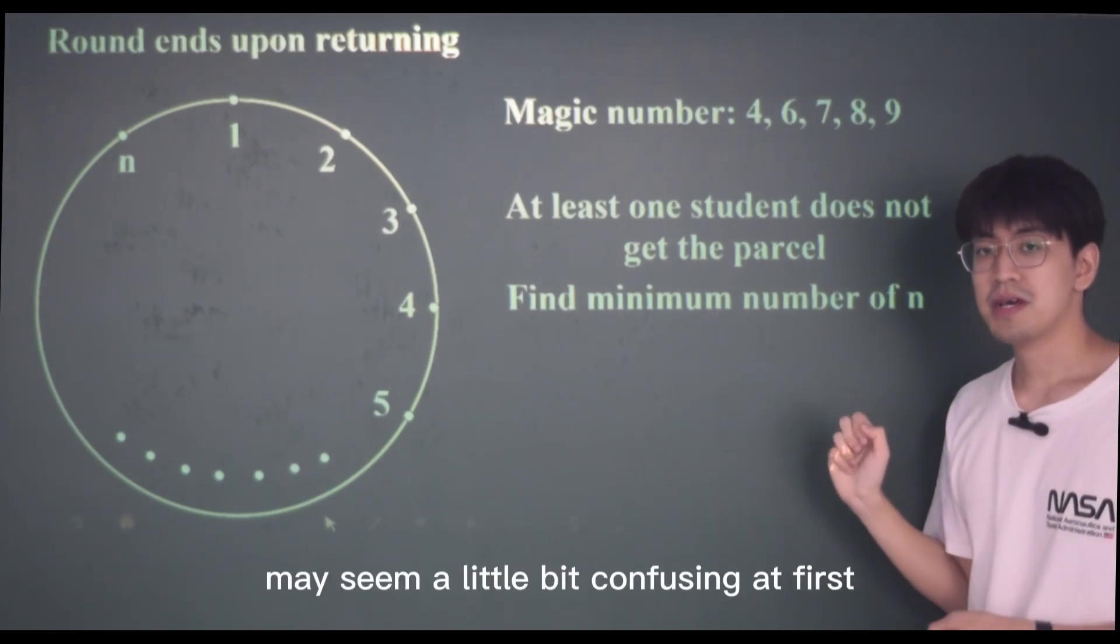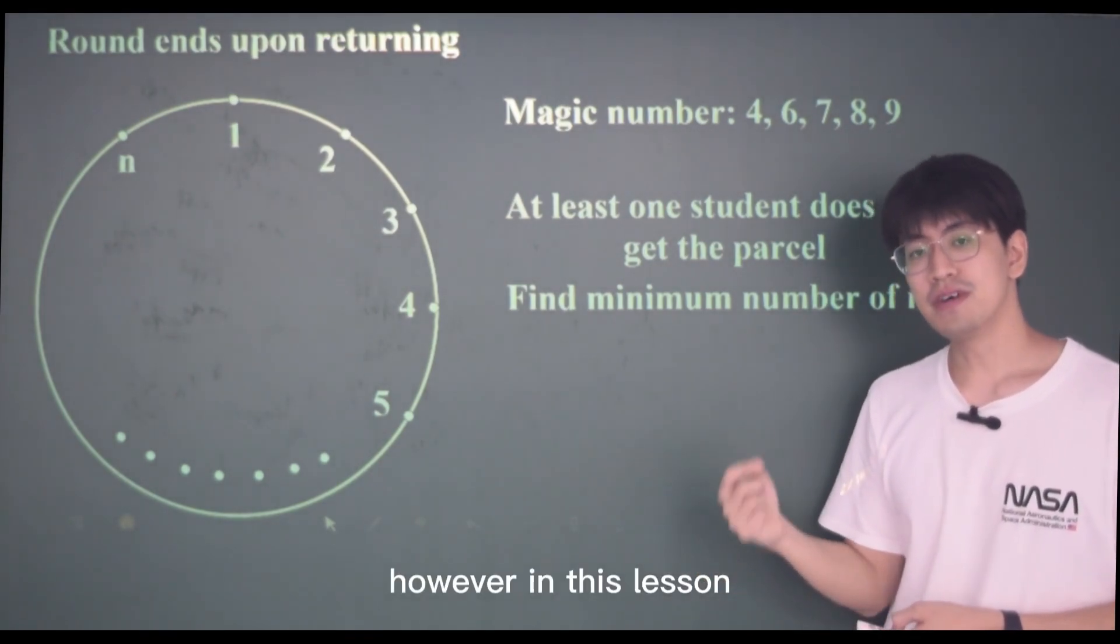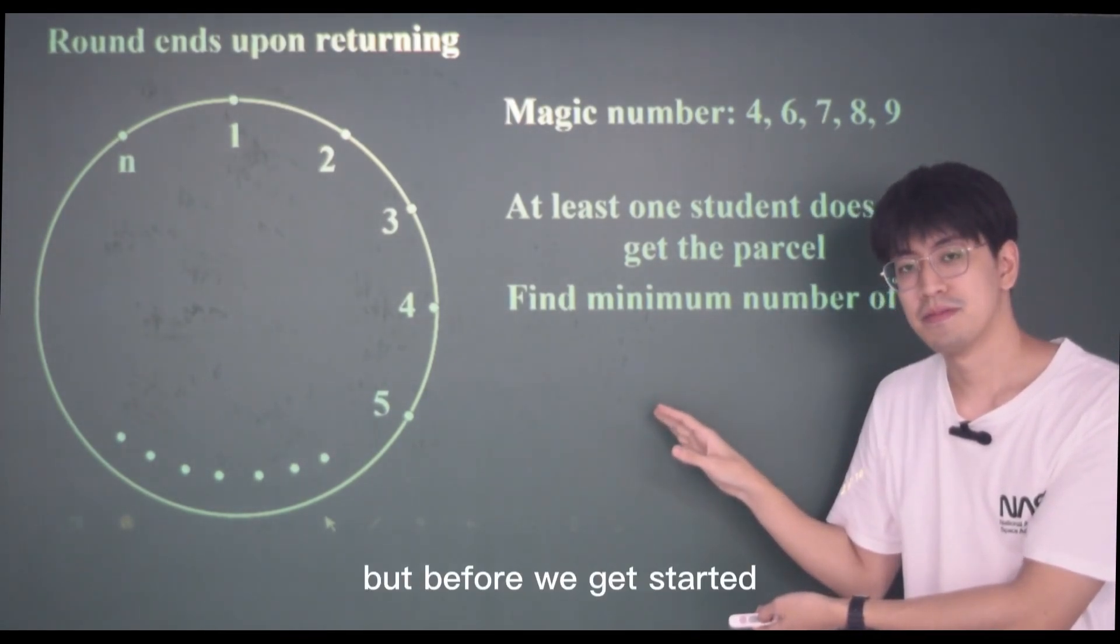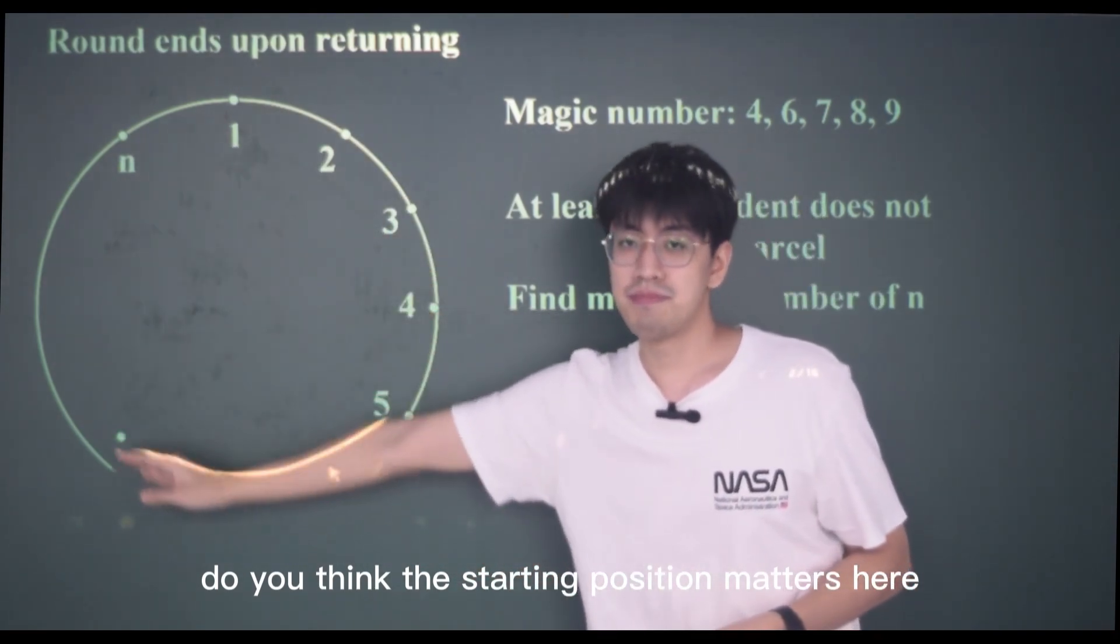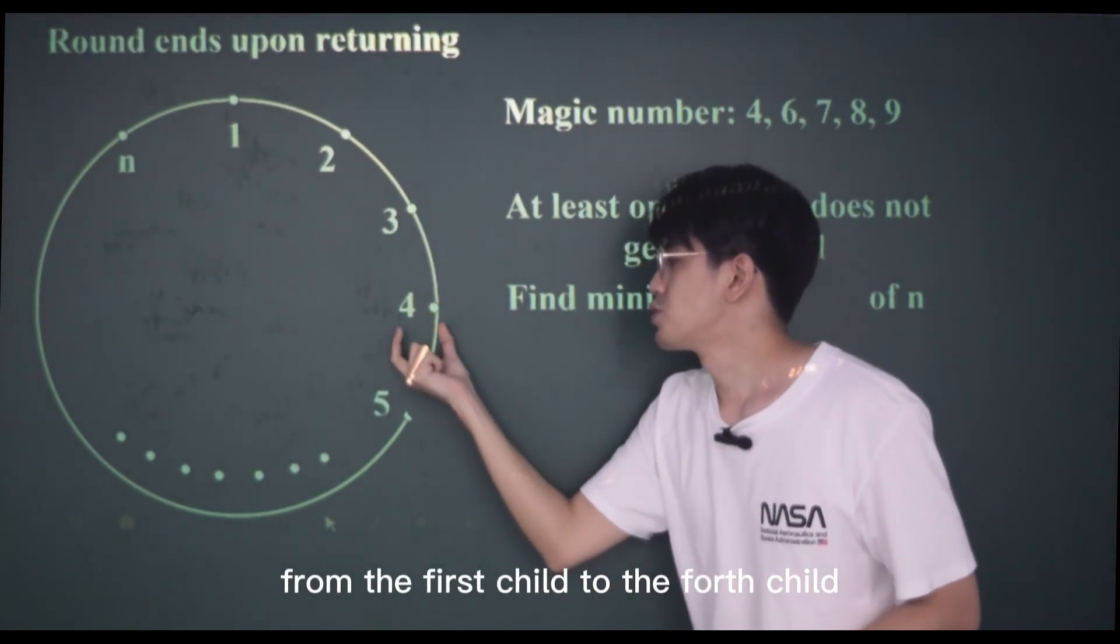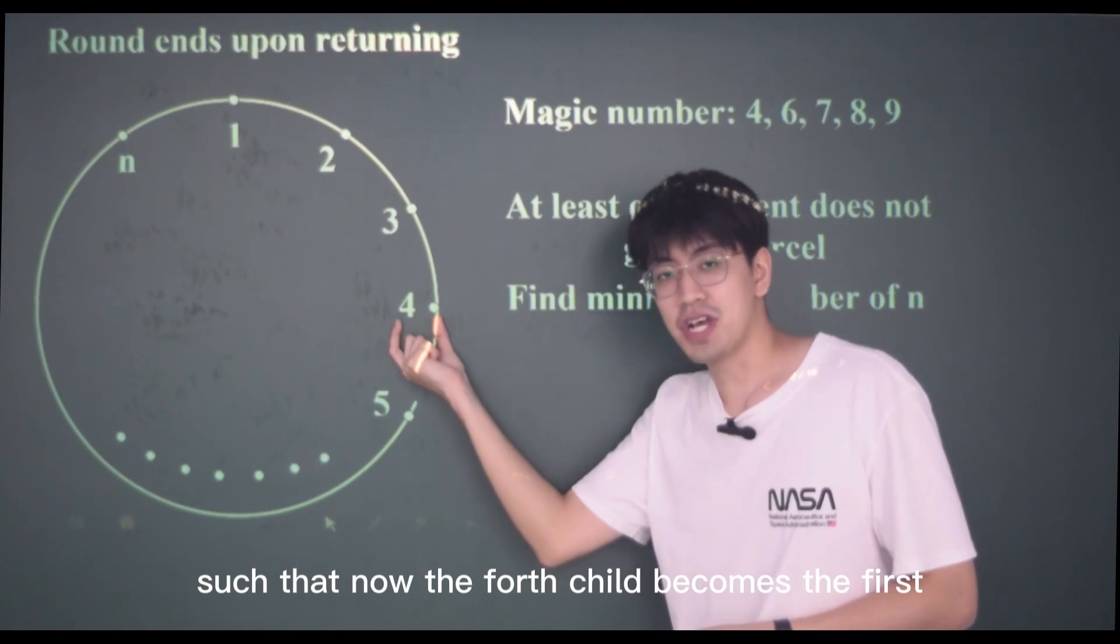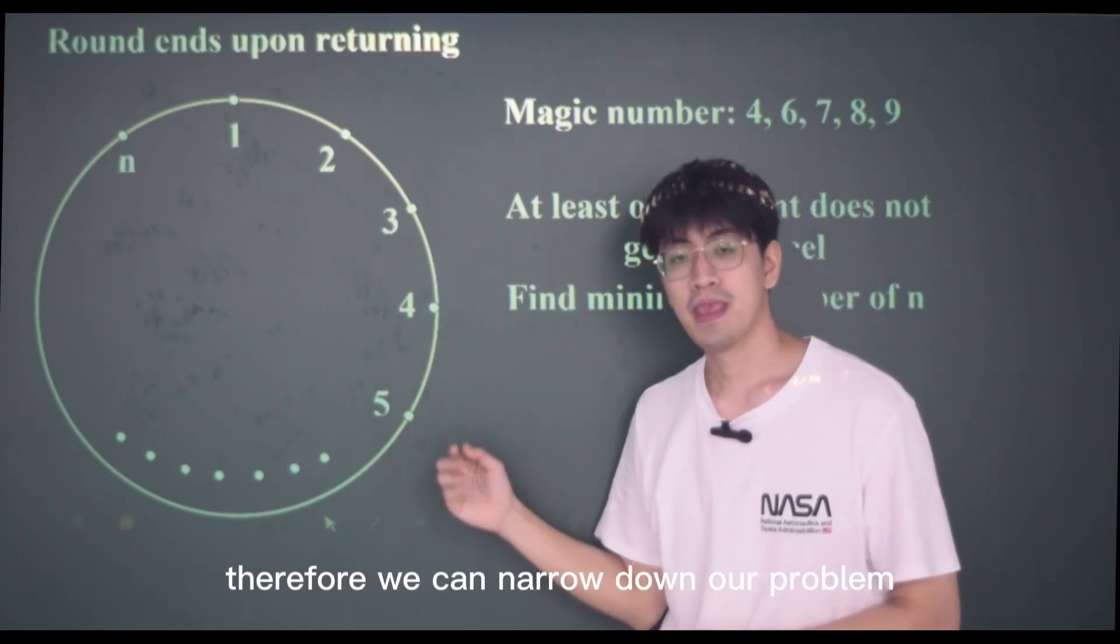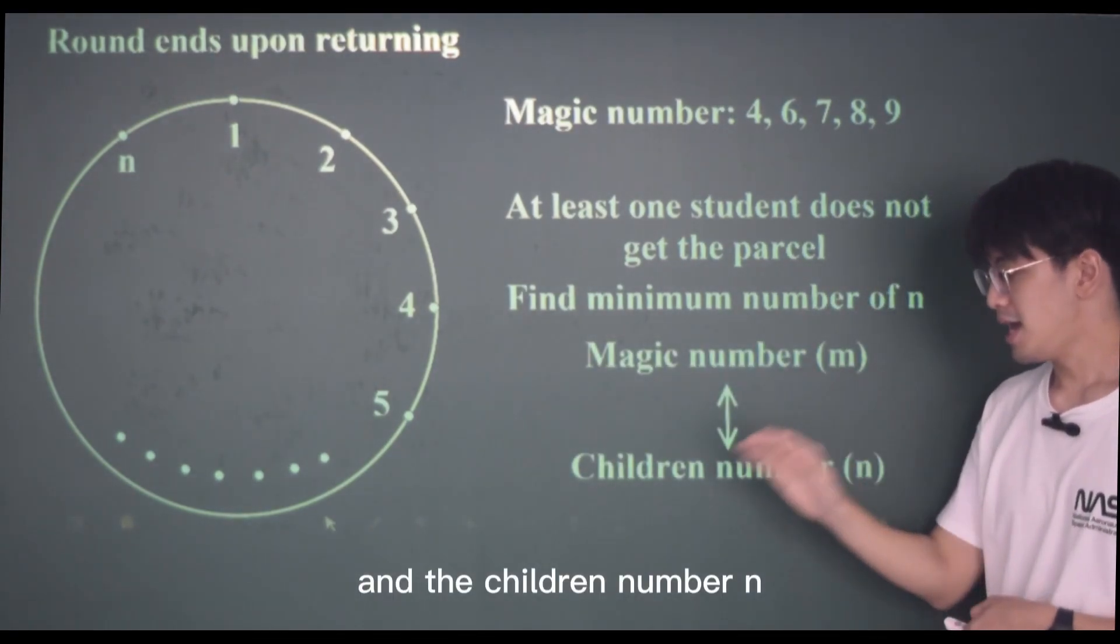This question may seem a little bit confusing at first, because it is the round one last question. However, in this lesson, we are going to learn the right way to approach such complicated questions. But before we get started, I want to address a confusing item. Do you think the starting position matters here? If we were to switch the starting point from the first child to the fourth child, we can simply relabel all of the children such that now the fourth child becomes the first. So we see that the starting position is irrelevant here. Therefore, we can narrow down our problem to finding the relationship between the magic number M and the children number N.